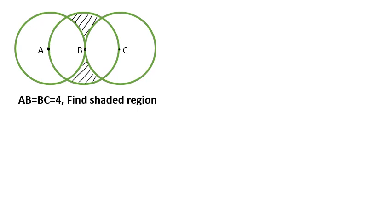What we've got is three overlapping circles. The centre of each is A, B, and C respectively. We've got a shaded region here on circle B, which we want to find. We're also told that the distance from A to B and from B to C — between the centres of the circles — is four. So this is the radius of the circles; radius is four.